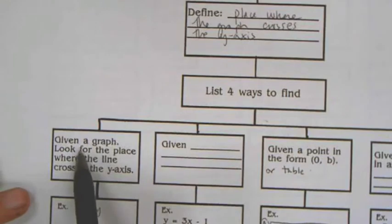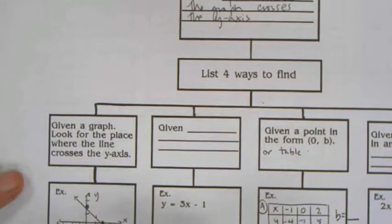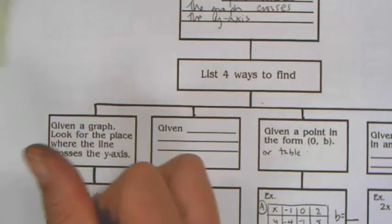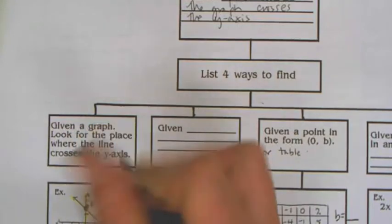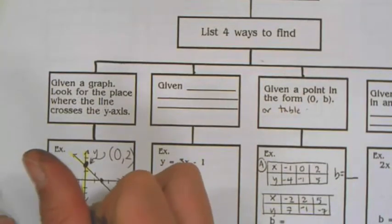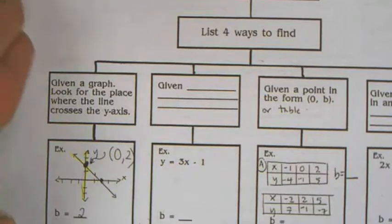First off is thinking about what you're given. If you're given a graph, you're going to look for the place where the line crosses the y-axis. Here's a graph, here's the y-axis. Let me find the highlighter. Here's the y-axis and the place where the line crosses it right there. It is the point (0,2), or sometimes we'll just say that the y-intercept is 2.